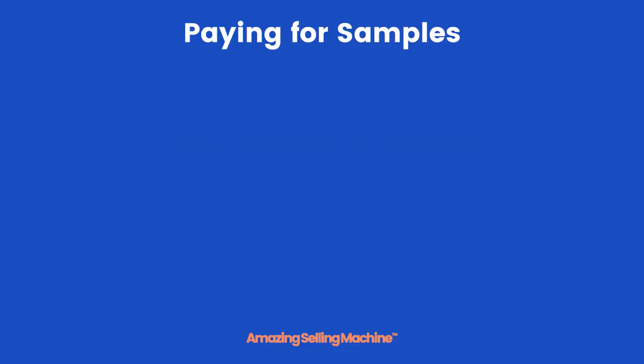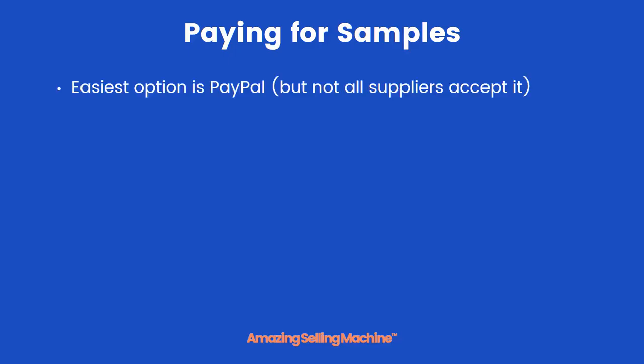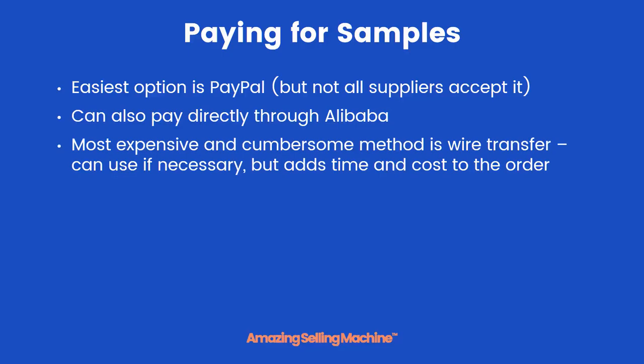You can usually pay for the sample several different ways, but a lot of it will be up to the supplier what they accept. PayPal is by far the easiest, but not all suppliers accept it. You can also usually pay directly through Alibaba if that's how you found the supplier. The most expensive and cumbersome way is a wire transfer — you can use it if absolutely necessary, but it adds time because you often have to go to the bank, and there's always an additional cost on your end.